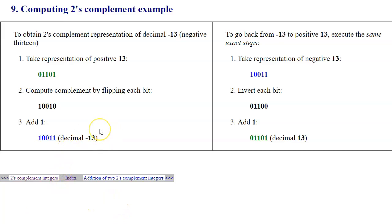Here we have an example of decimal negative 13, and computing its encoding based on its positive representation. The positive representation of 13 is 0, 1, 1, 0, 1 in a 5-bit data type. First step is to take the positive value, flip every bit, computing the complement, so 0 becomes 1, and 1 becomes 0. And then the third step is to add 1. So it becomes 1, 0, 0, 1, 1. This is a representation of a negative 13 in two's complement encoding.